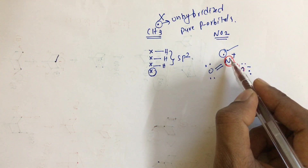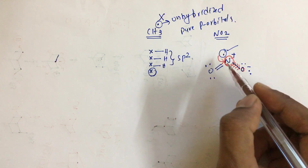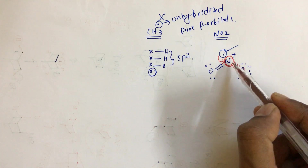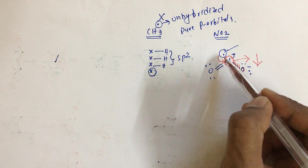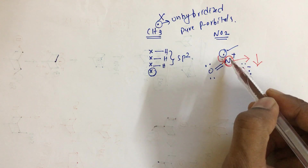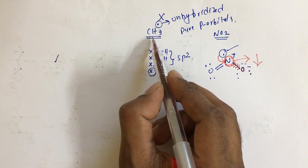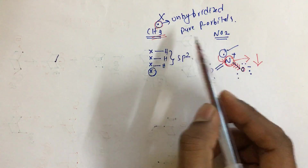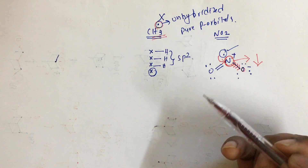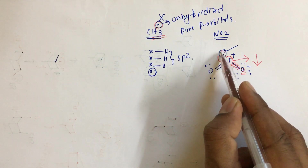Because the central atom becomes electron deficient, nitrogen takes the odd electron into its hybridization. The electron density of nitrogen decreases, so the odd electron gets involved in hybridization. When the central atom is attached to a less electronegative atom, the single electron stays as a pure p orbital and does not hybridize.